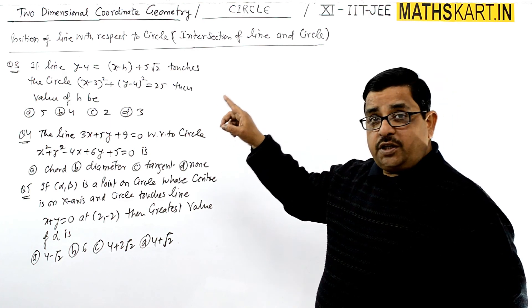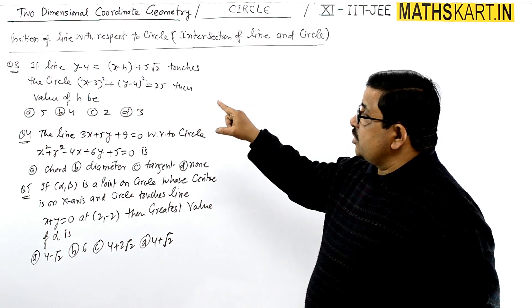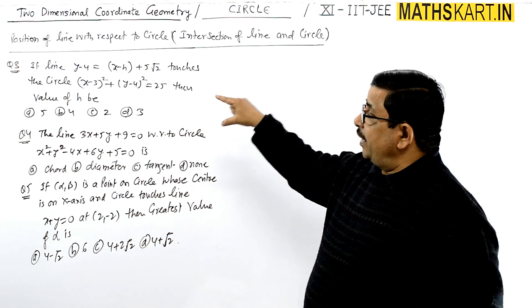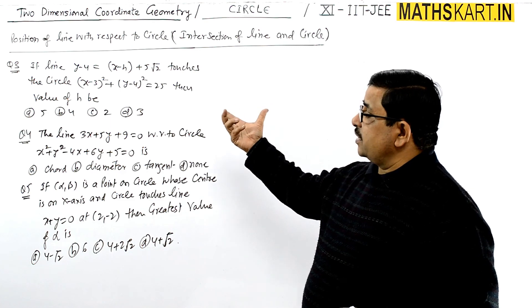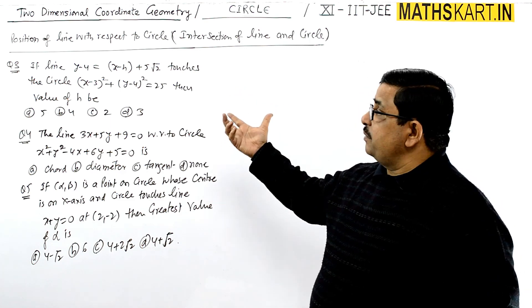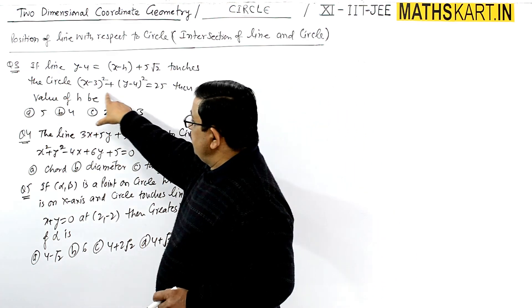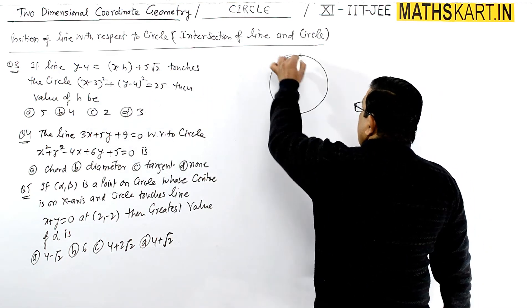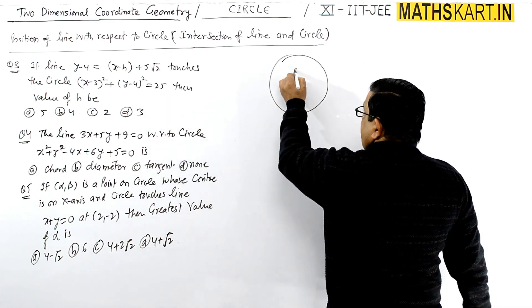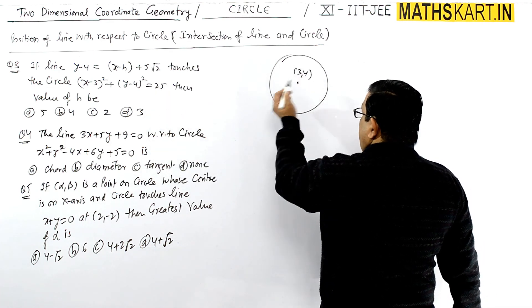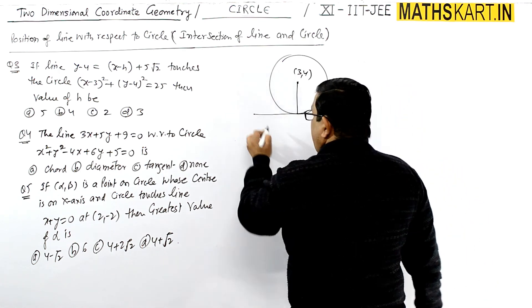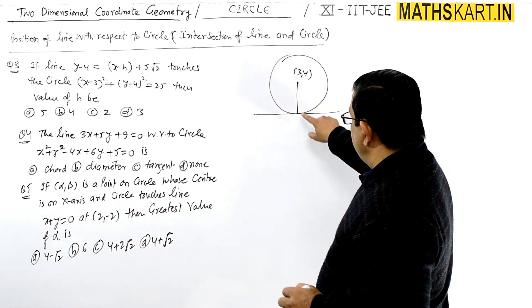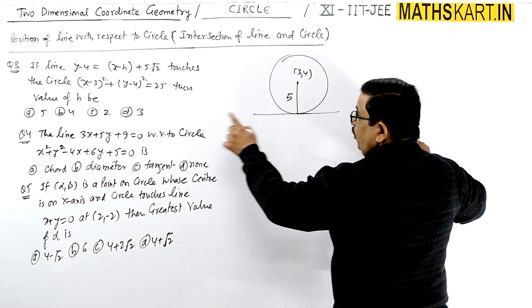If the line, question number 3, if the line y-4 equals x-h plus 5√2 touches this circle, then value of h is. And the circle is given, so better we have the direct condition to write. Because if the circle is already given in format, then it tells us that the center is (3, -4) and the radius is 5.